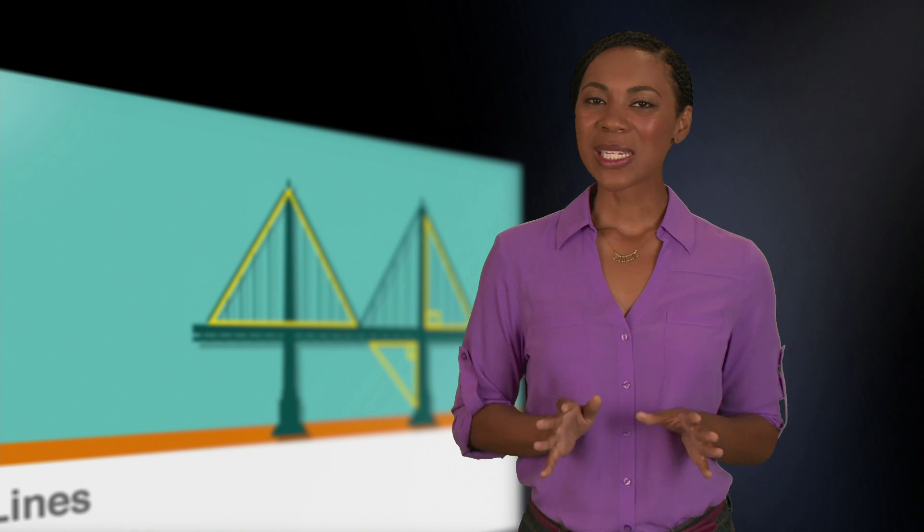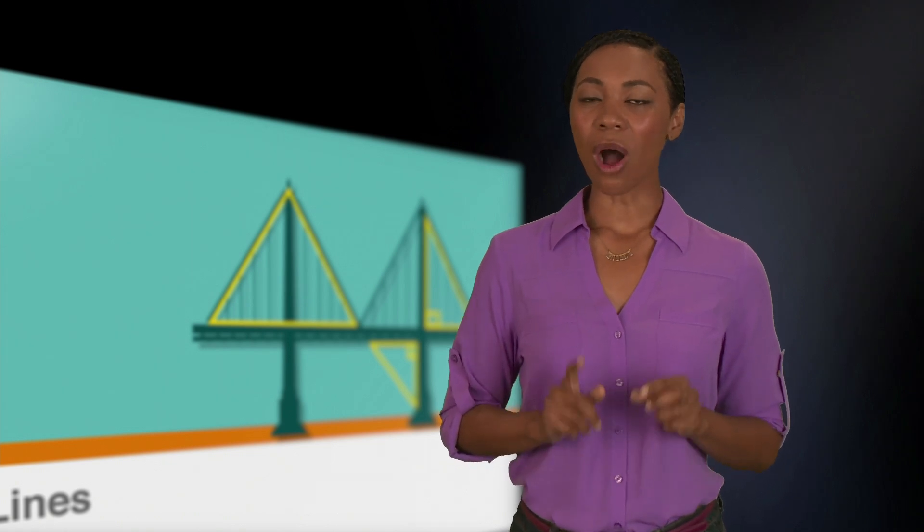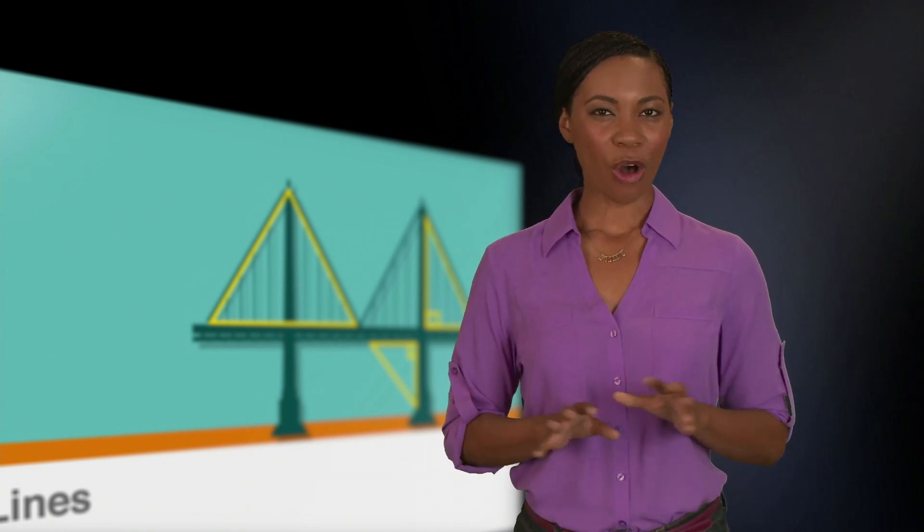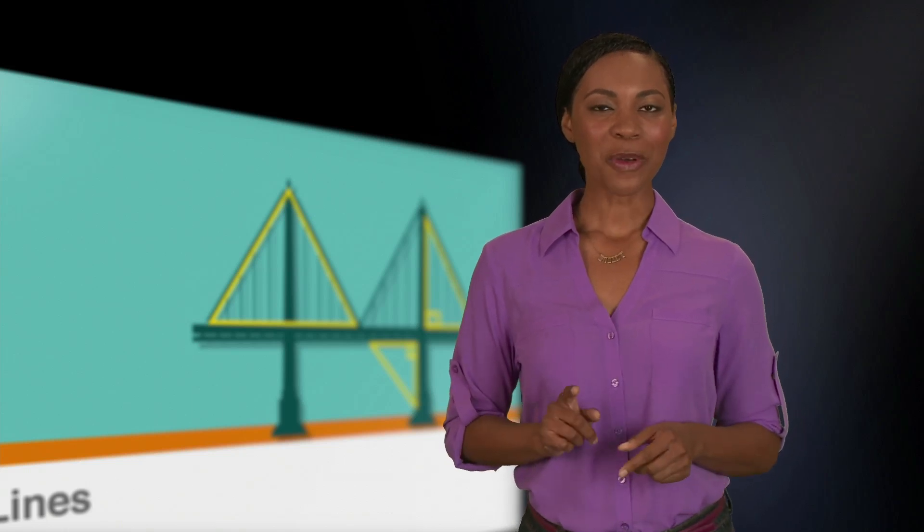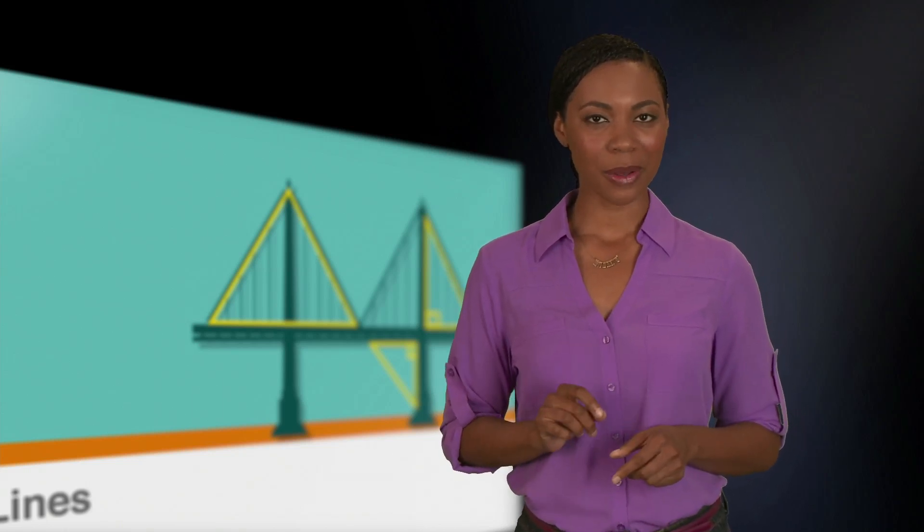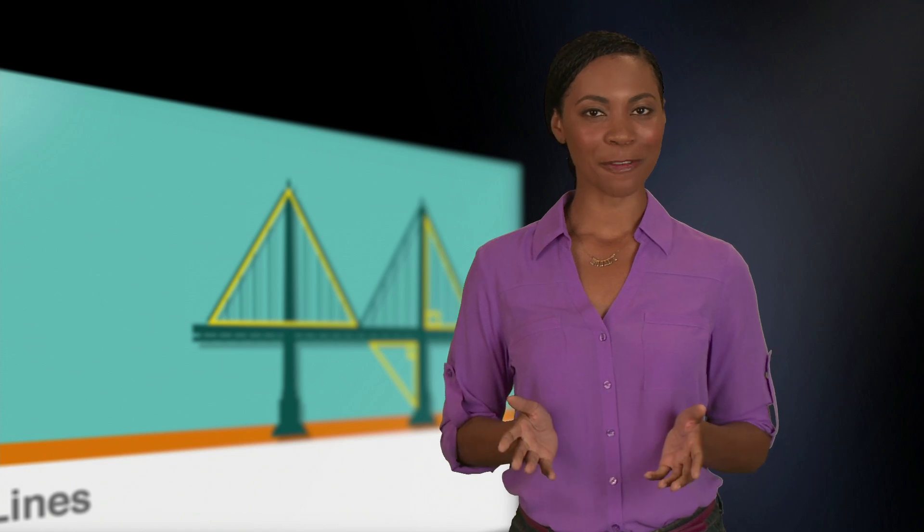We know that corresponding and vertical angles are always congruent, and that all straight lines add up to 180 degrees. So, if we know the measurement of just one of the angles in this figure, we can solve for the rest.